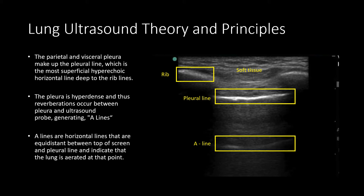Another important concept is what we call A-lines. These A-lines are not real anatomy — they are what we call a reverberation artifact. An A-line appears very similar to the pleural line because it is the ultrasound beam going from the skin to the pleural line and bouncing back to the probe. What we see is a similar-appearing line that is equidistant between the top of the screen and the pleural line. If the distance from the top of the screen to the pleural line is about two centimeters, an A-line would be approximately four centimeters from the top, or two centimeters from the pleural line. The presence of A-lines indicates that that point in the lung is properly aerated.